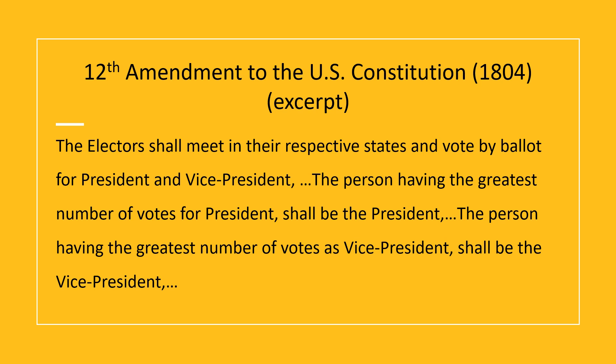The 12th Amendment changed this because the 12th Amendment requires the separate election of president and vice president. That means the president and vice presidential candidates now can run together as a team, and the inherent competition that the original system created was addressed by the 12th Amendment. Here it says the electors shall meet in their respective states and vote by ballot for president and vice president — so two separate votes.